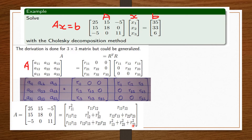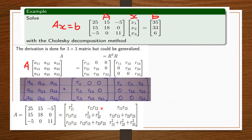Now we compare each result to the corresponding element in matrix A. r11² corresponds to 25, so r11 = 5. I substitute 5 wherever r11 appears. Then r11·r12 corresponds to 15; since r11 = 5, we get r12 = 3. I substitute 3 wherever r12 appears.